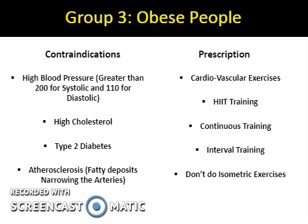Finally we will be looking at the final group which is obesity. Some contraindications for obese people when performing exercise is atherosclerosis, which is the fatty deposits in the arteries which can cause them to narrow. Some other contraindications are type 2 diabetes, high cholesterol and high blood pressure. Narrowing of the arteries causes an increase in blood pressure and a weakening of the arteries, which means that they could burst and blood cannot be distributed to certain parts of the body.